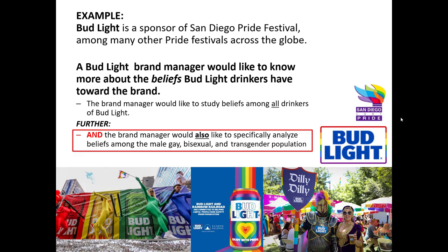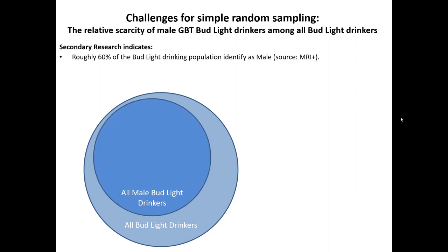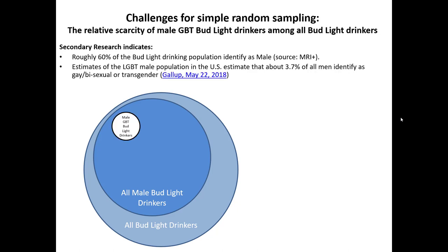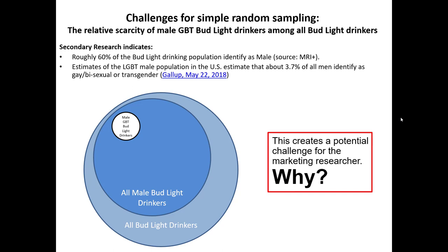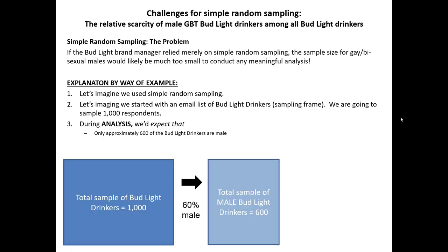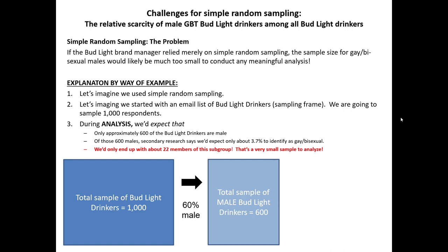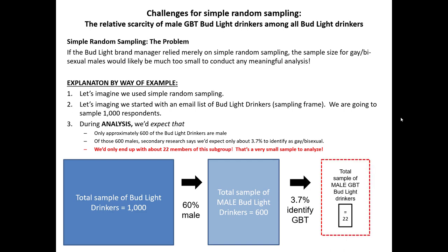According to secondary research, roughly 60% of all Bud Light drinking individuals identify as male. And in the United States, current research suggests that amongst males, 3.7% identify as members of the GBT community. If we did simple random sampling, the resulting sample would almost certainly have far too few GBT males for us to conduct any meaningful analysis on this subgroup. If we sampled 1,000 total Bud Light drinking respondents, since 60% were likely to be male, we'd have 600 male Bud Light drinkers. Of those 600 males, we'd expect about 3.7% to identify as GBT — meaning from a sample of 1,000, we would only have 22 individuals who identify as male GBT.